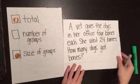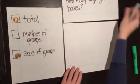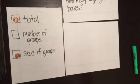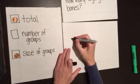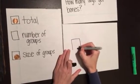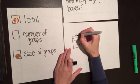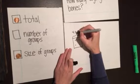If I was going to make a tape diagram to solve this problem, here's what I would do. First I would draw one unit. I know that each dog got four bones. So that equals four bones.